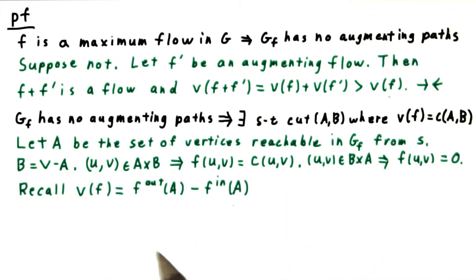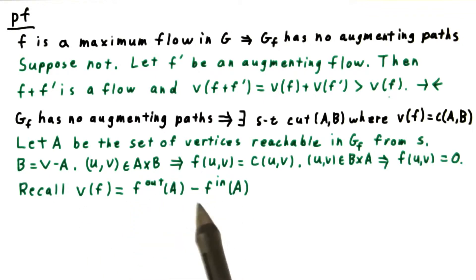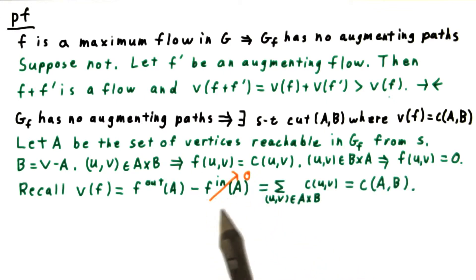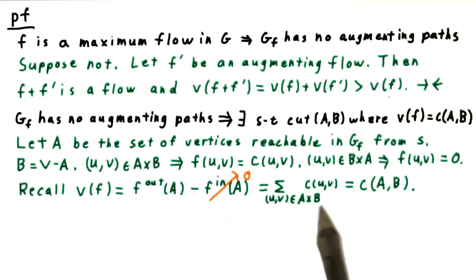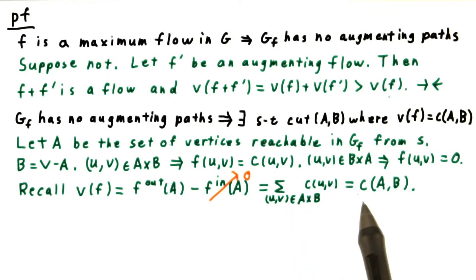Recall that for any cut, the value of a flow is the flow out of the partition with the source minus the flow into the partition with the source. As we just argued, however, in this case there is no flow back into the source partition. Moreover, the flow saturates all the edges, so it's just the sum of the capacities across the cut from A to B, which is then defined as the cut capacity.